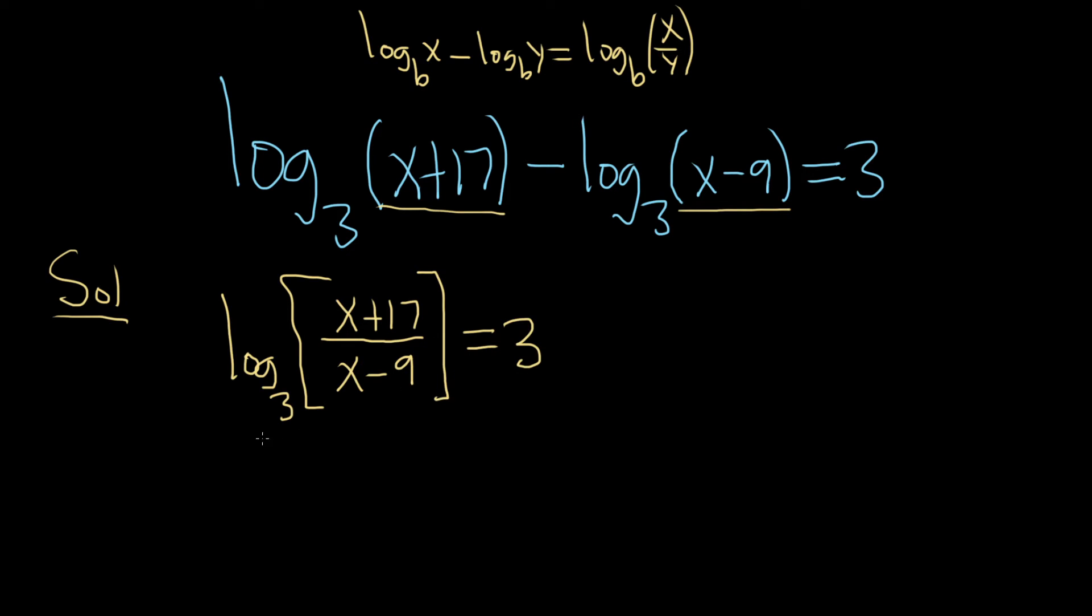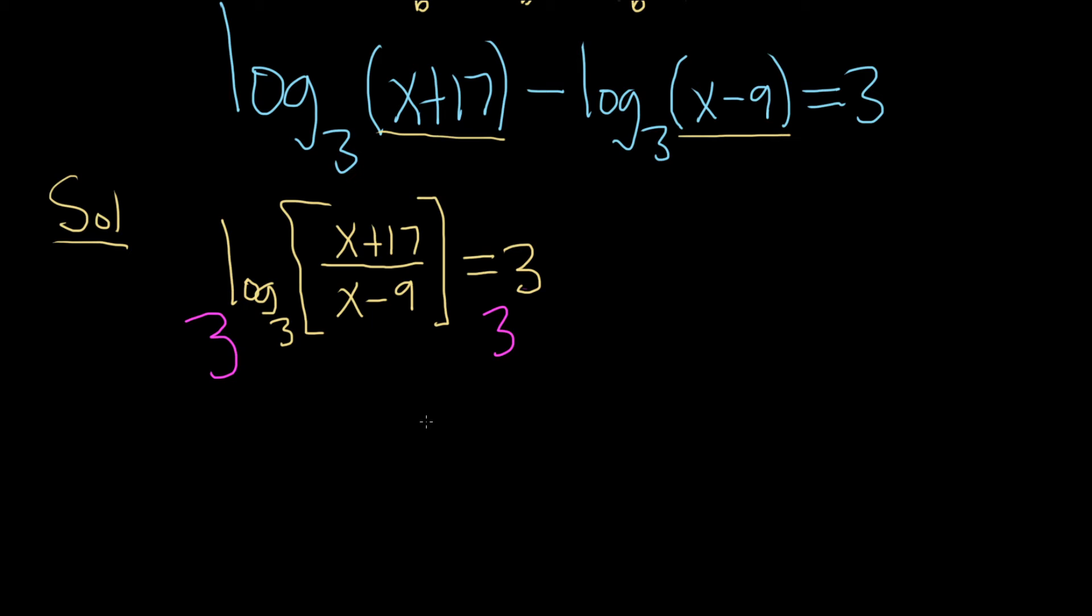So now we just need to get rid of the log. What you can do is something called exponentiation. Because the base here is 3, you put a 3 here so this whole thing is your exponent. Same thing here, you put a 3 here, so now this 3 is your exponent. When you do this, these cancel. So you're just left with x plus 17 over x minus 9, and then 3 to the third power.